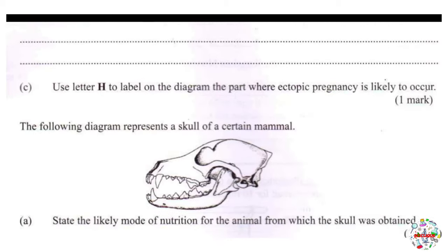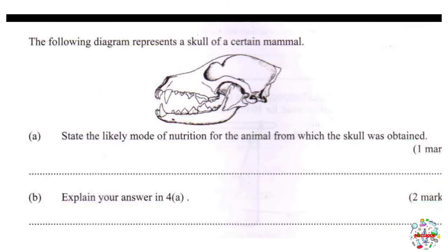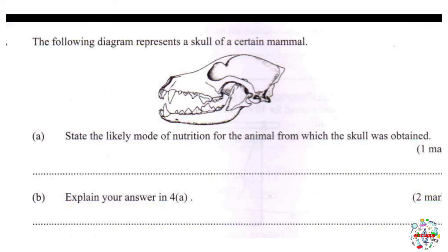Moving on to question number 4: the following diagram represents a skull of a certain mammal. Part A: state the likely mode of nutrition for the animal from which the skull was obtained. If we look at the skull, there are certain hints that indicate the mode. When talking about mode of nutrition, there are only three possibilities: carnivorous, omnivorous, and herbivorous.